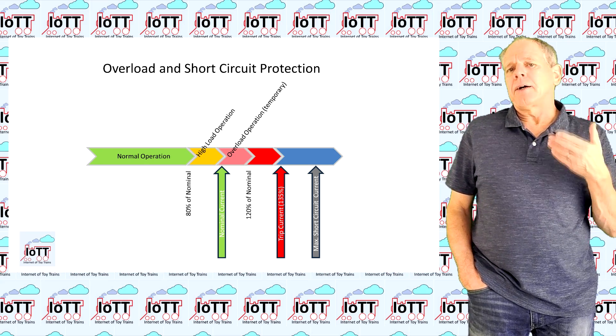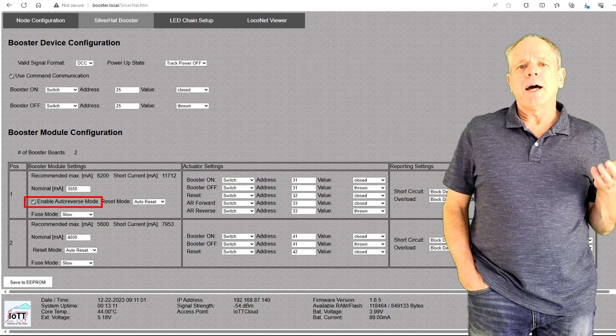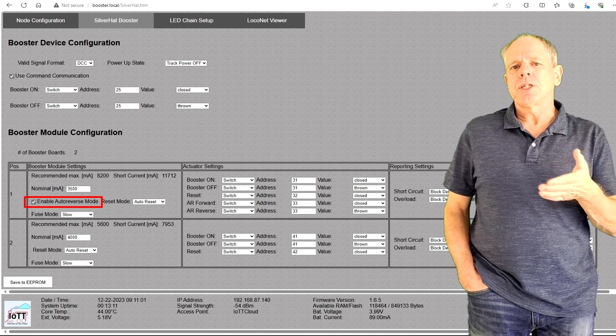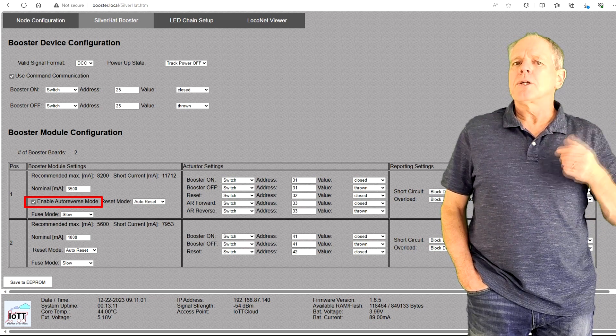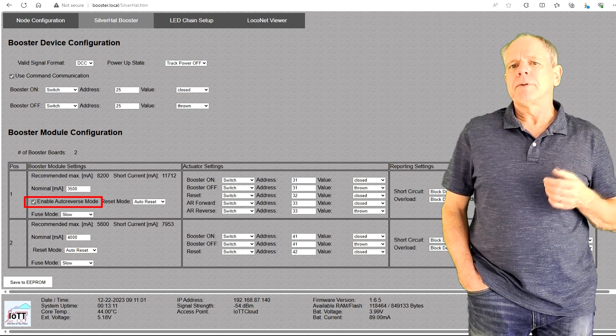If you have configured an auto-reversing pin in the hardware setup, you get the auto-reverse checkbox. If you activate it, the booster will try to change the output polarity in case of a short circuit before it shuts down. This allows for a short circuit-based auto-reversing section.